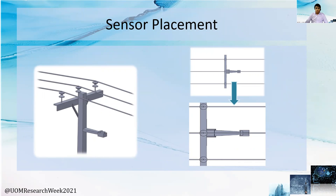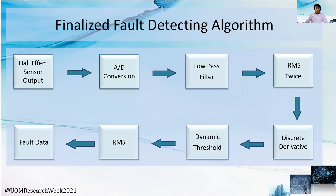The figure shows a visual image of the sensor placement on a distribution line pole. Here is the finalized fault detection algorithm used to capture the fault. This algorithm is entirely our own creation, developed based on our experiments and observations. As part of this project, we developed a MATLAB Simulink model for the Hall effect sensor, which is not readily available in the MATLAB library. Another key feature is the development of a dynamic threshold function with a self-defined threshold value, making our system more reliable and smarter.